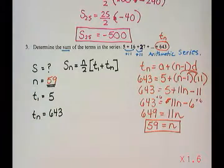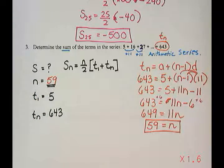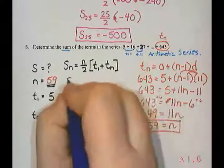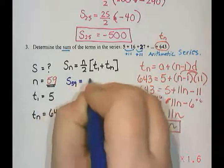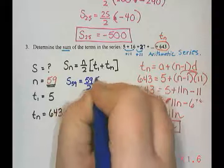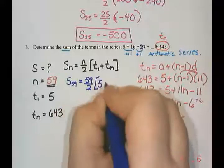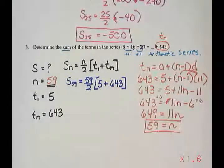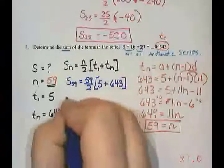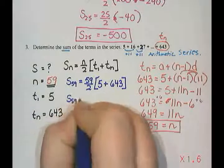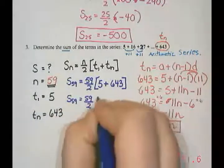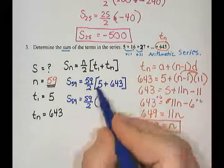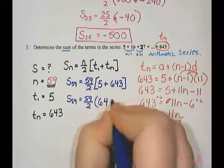Or the series. So what I'm going to do is then substitute everything in and calculate what my sum is of the first 59 terms. So I do 59 divided by 2 times term 1, which is 5, and 643, which is my last term. So I'm going to add the bracket first. Leave that 59 over 2. It doesn't divide nicely. Well, it just gives me a decimal. So 643 plus 5 is 648.